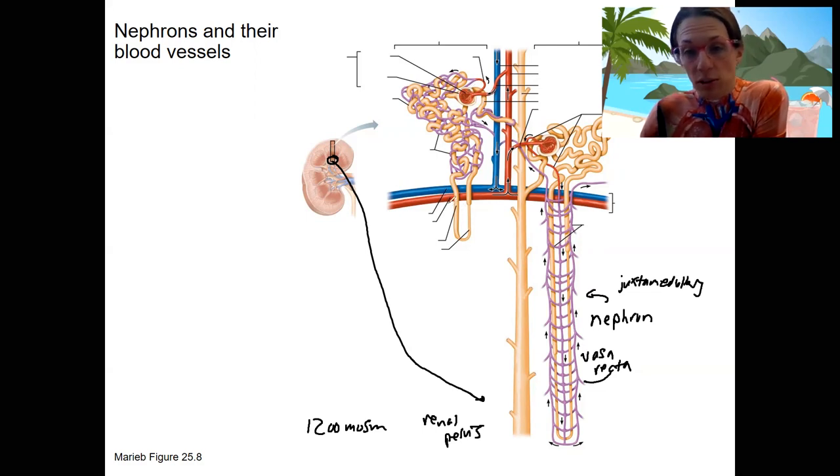Actually, the nephron loops do the same thing, but they are not able to the same extent. They're not reaching that 1200 milliosmoles to allow for as much water and solute reabsorption.